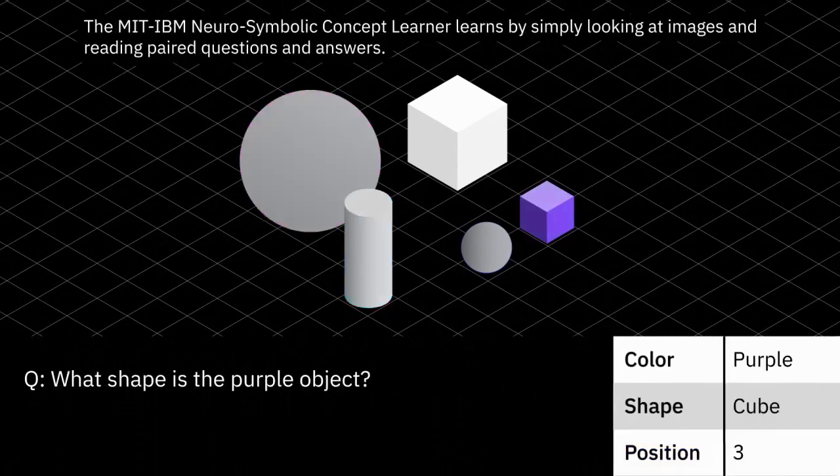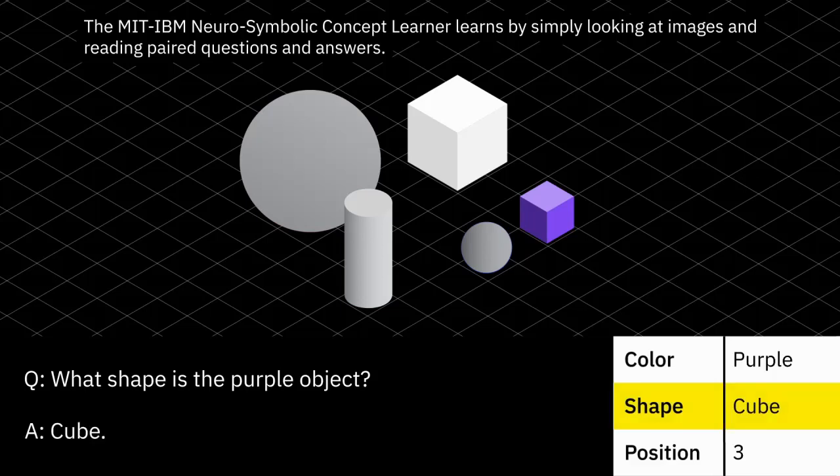The MIT IBM Neurosymbolic Concept Learner learns by simply looking at images and reading paired questions and answers.